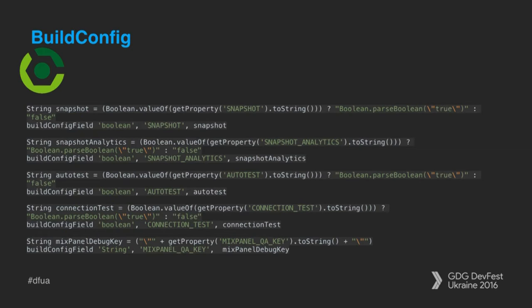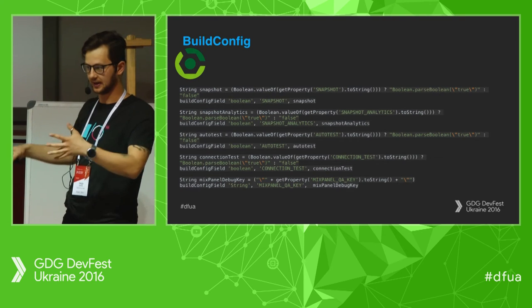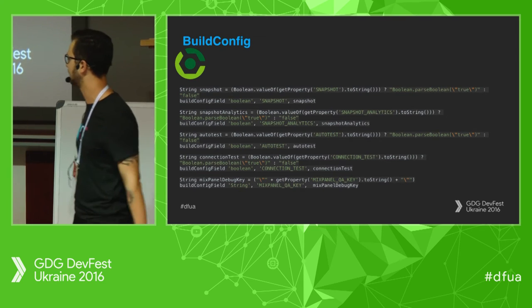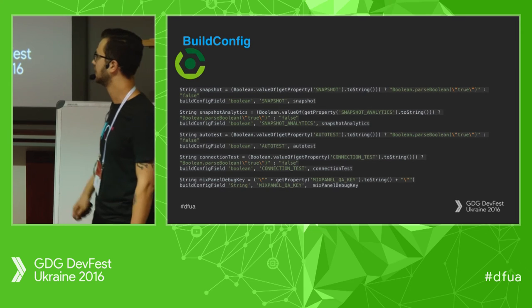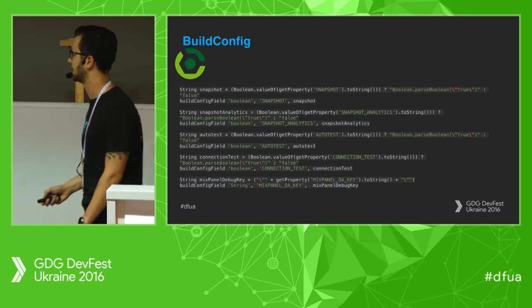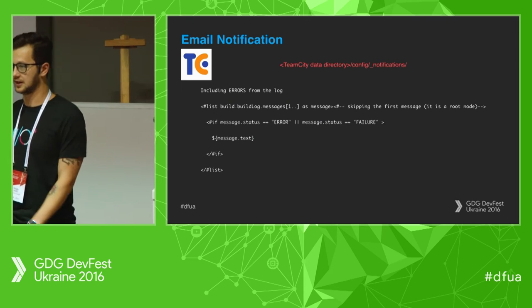BuildConfig is a useful thing that lets you control your Java code at compile time. It's a file generated during the build process — you can attach values to it during compile time and reuse them in your Java code.